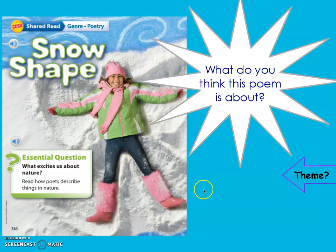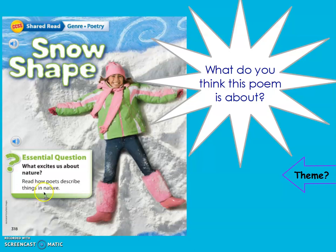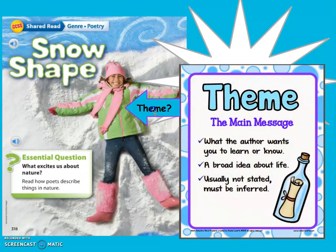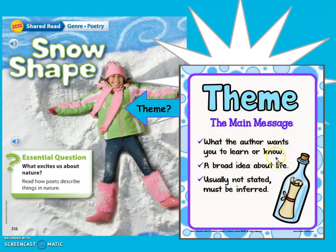So we're going to look at this first poem, Snow Shape. What do you think this poem is about? Looking at the image and using the words snow shape — this girl is in the snow and she's making a snow angel. You can always look at the essential questions over here too, because they're going to give you clues: 'What excites us about nature?' and 'Read how poets describe things in nature.' When we're talking about theme, we're talking about the main message, what the author wants you to learn or know — a broad idea about life — and we're going to have to infer it ourselves using the clues in the poems.